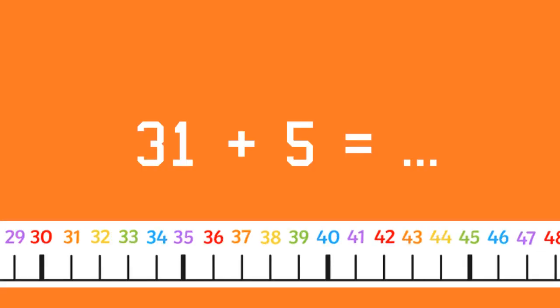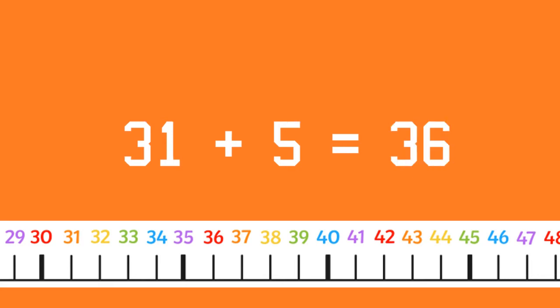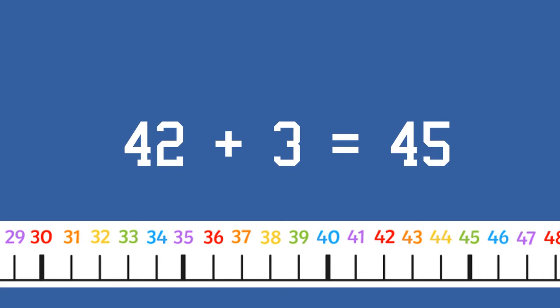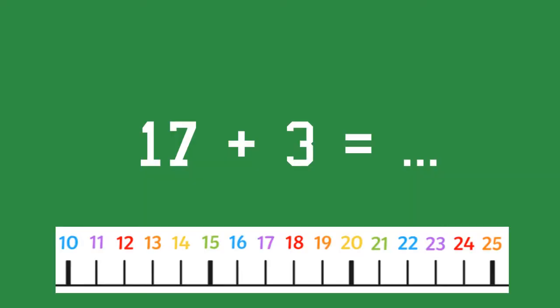31 plus 5 equals? 36. 42 plus 3 equals? 45. 17 plus 3 equals? 20.